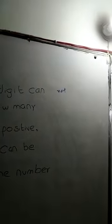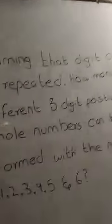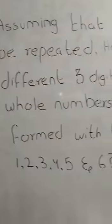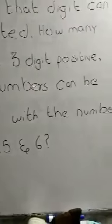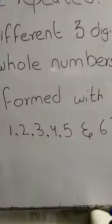Assuming that digits cannot be repeated, repetition is not allowed. Now, how many different 3-digit positive whole numbers can be formed from 1, 2, 3, 4, 5, and 6?